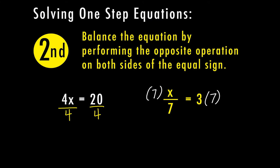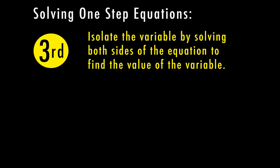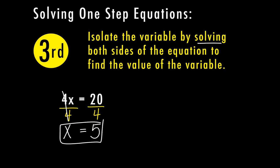For step 3, we're going to isolate the variable by solving both sides of the equation to find the value of that variable. For example 1, I have 4x divided by 4, and 20 divided by 4 on the right side. 4 divided by 4 is 1, and 1 times x just equals x — so the left side is isolated. On the right side, 20 divided by 4 equals 5. So x equals 5.